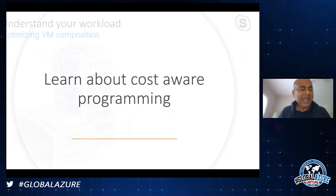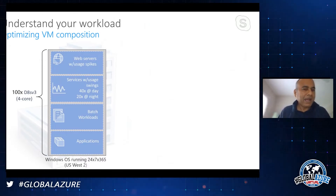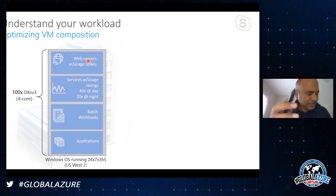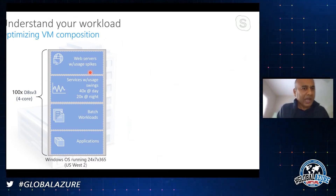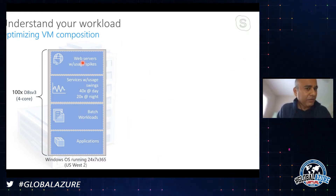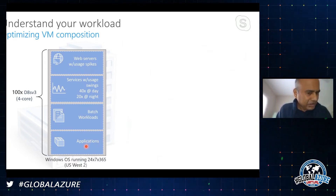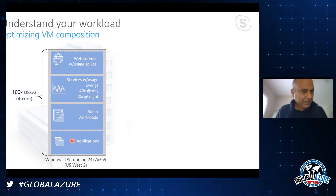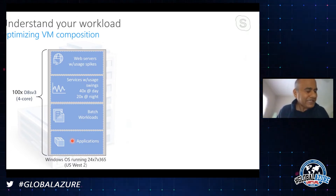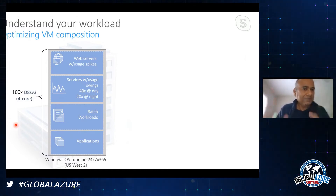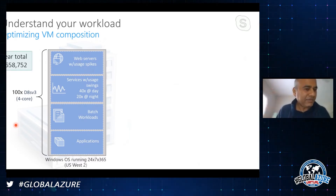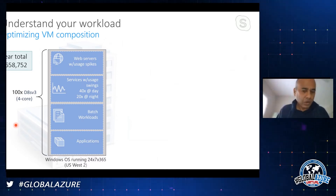Here we have an application portfolio comprised of four things: web servers with typical spikes, a bunch of services with more predictable spikes, batch workloads, and line of business applications. A very typical portfolio. I can run them all on 100 D8 SV3 four-core machines - and I can meet all requirements - but if I did that I would end up paying $658,000 a year. What can we do better?